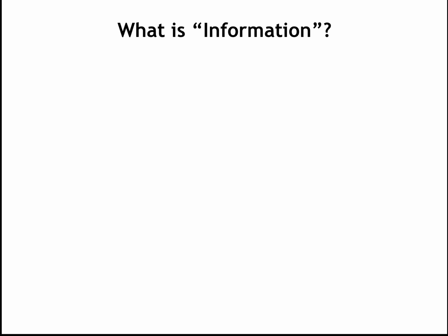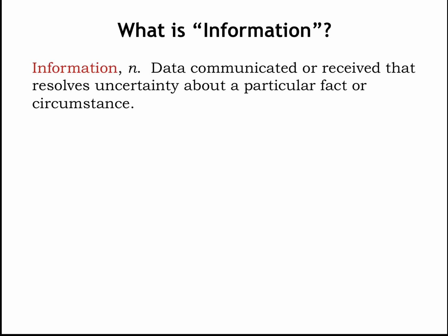Let's start by asking: what is information? From our engineering perspective, we'll define information as data communicated or received that resolves uncertainty about a particular fact or circumstance. In other words, after receiving the data, we'll know more about that particular fact or circumstance. The greater the uncertainty resolved by the data, the more information the data has conveyed.